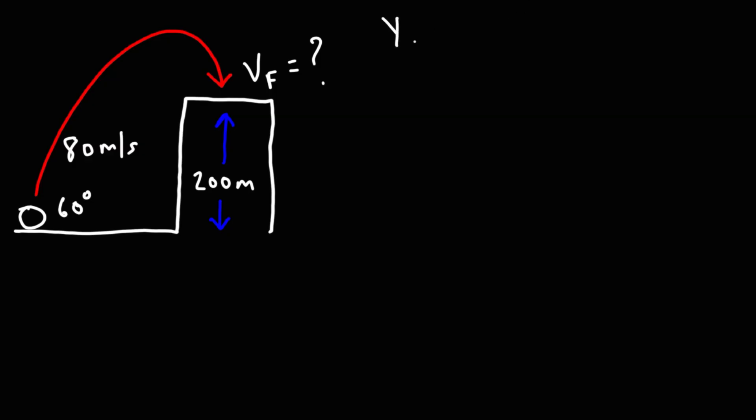The first equation that we could use is this one: y final is equal to y initial plus vy initial t plus 1 half at squared. Using this equation, we could find the time it takes for the ball to go from position A to position B. Once we have the time, we can calculate the final speed in the x direction and in the y direction just before it strikes the building, and then with that we can get the final speed overall.